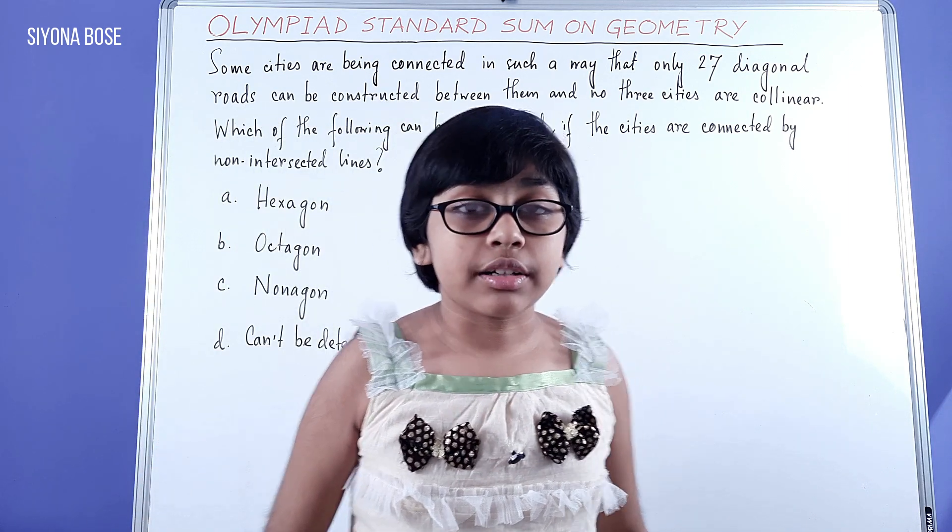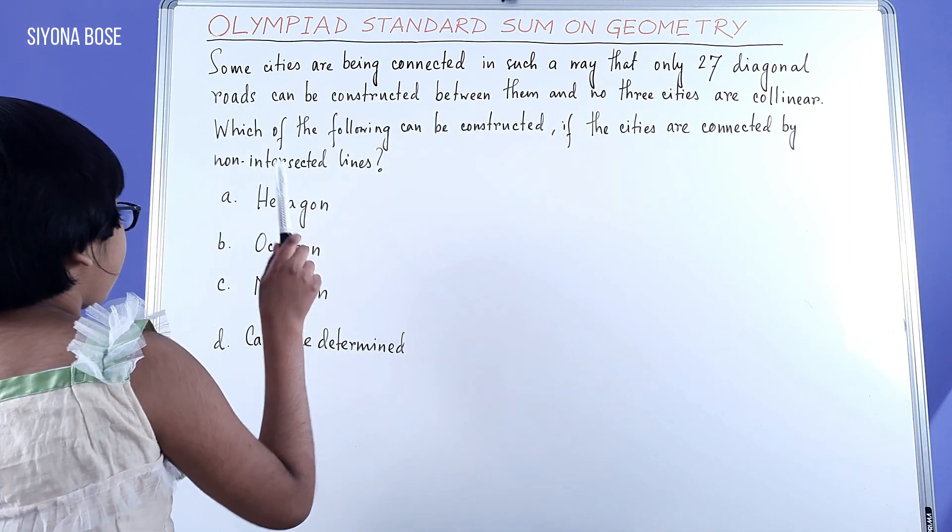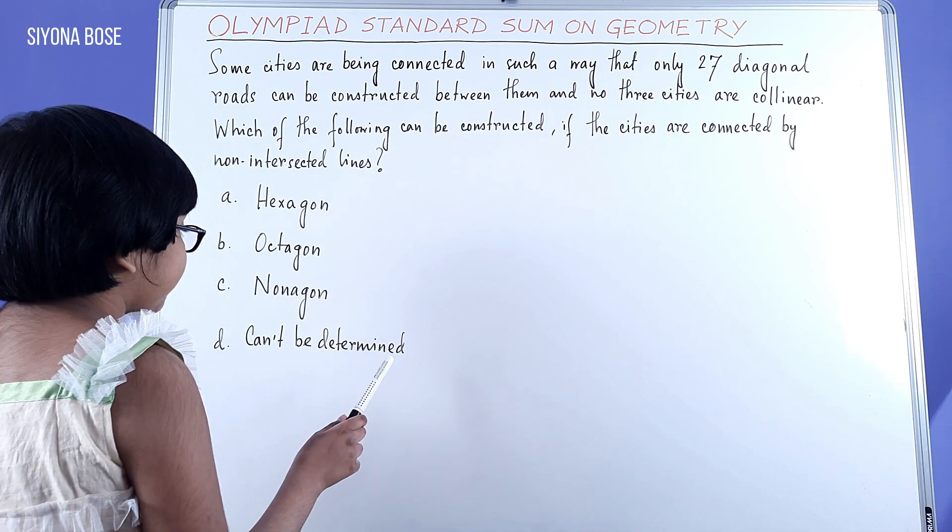Which of the following can be constructed if the cities are connected by non-intersected lines? The options are hexagon, octagon, nonagon, can't be determined.